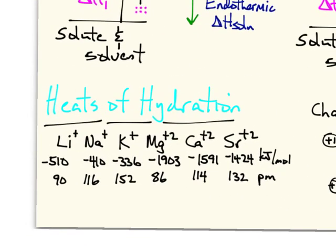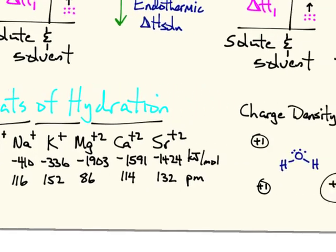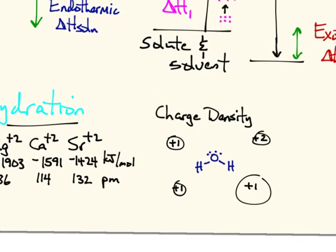On our chart over here, magnesium, calcium, and strontium all have greater charge densities than lithium, sodium, and potassium because they have a greater charge. Lithium has a greater charge density than potassium because it's smaller. And so, therefore, it has a more exothermic heat of hydration. So we have this idea of charge density. As the charge density increases, the heat of hydration becomes more exothermic.